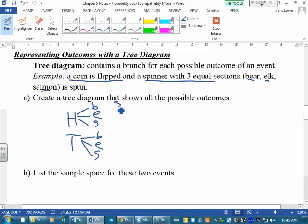So my sample space is heads with a bear, heads with an elk, or heads with a salmon. Or it could have been tails with a bear, tails with an elk, or tails with a salmon.